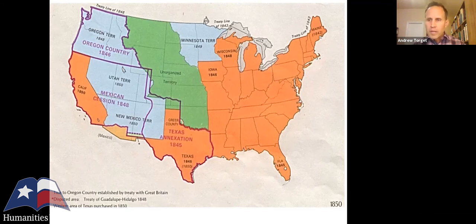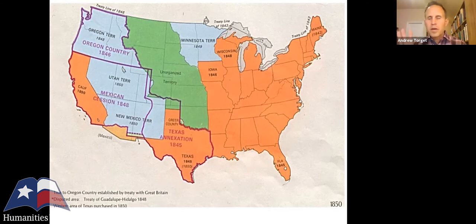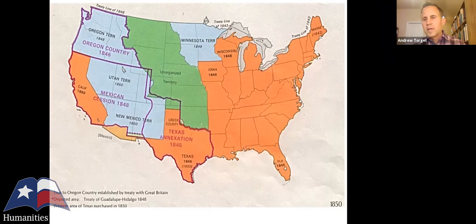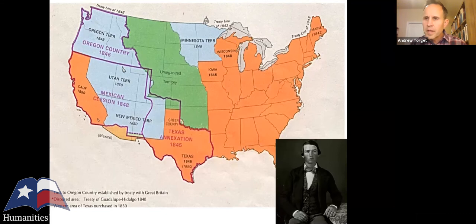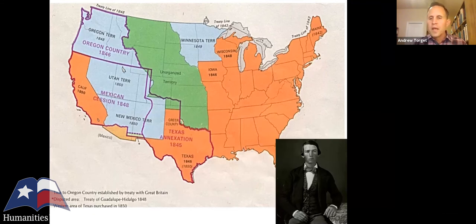I always pause at this point with my students and ask: why is that such a crisis? I start with Mississippi, Alabama, and Missouri to establish the balance issue, then ask why California's petition was such a big problem 30 years later. I walk through both the southern perspective and the northern perspective looking out west, spending a good deal of time on this because it's essential to understand the road to the Civil War that follows.